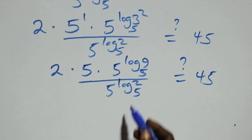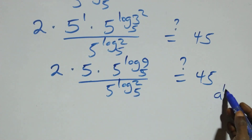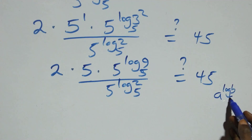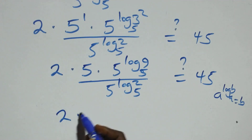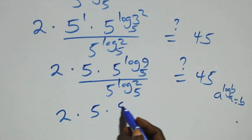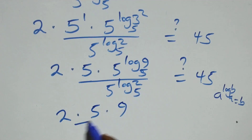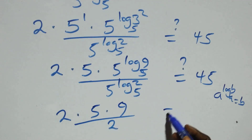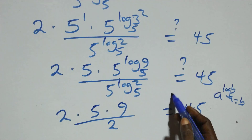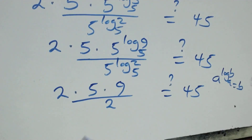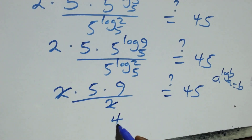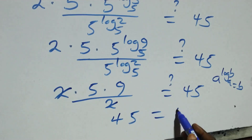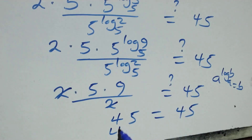This follows the law of logarithms: a raised to power log b to base a equals b. So 5 raised to power log 9 base 5 equals 9, and 5 raised to power log 2 base 5 equals 2. We have 2 times 5 times 9 over 2. The 2 cancels, leaving 5 times 9 equals 45, which equals 45 on the right hand side. The left hand side equals the right hand side.